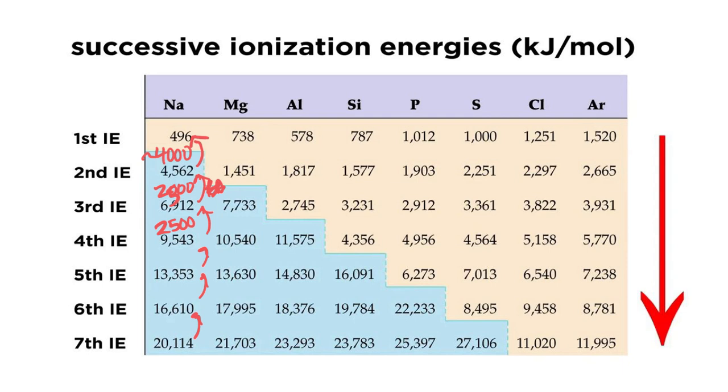If we look at magnesium, this jump here is around 700, and then we get a jump of about 6,000, and then this one's about 3,000, and so on.